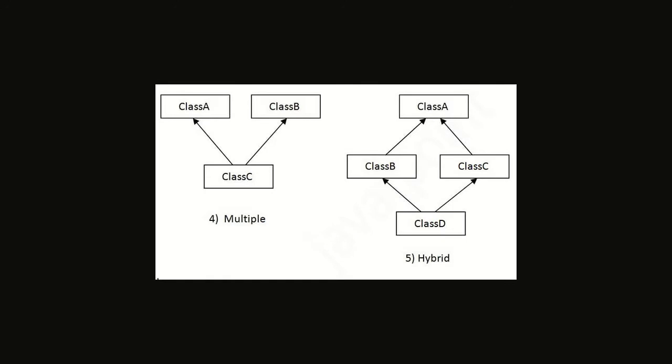Two classes will use the properties and methods of a single class — that is possible. Now for the fourth part: multiple inheritance. Here class C is extending both class A and class B, so class C has properties and methods of both. But hold on — Java does not allow multiple inheritance based on classes. For allowing multiple inheritance we have something called an interface.